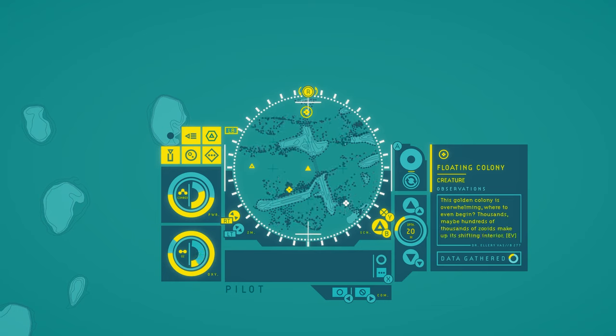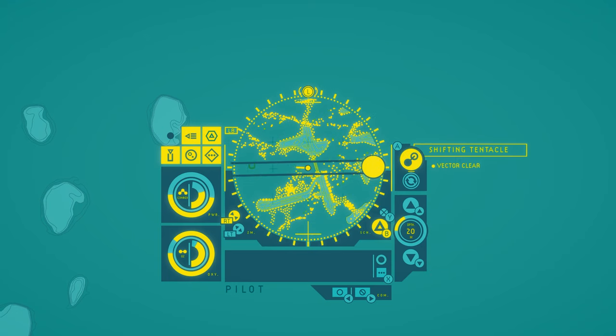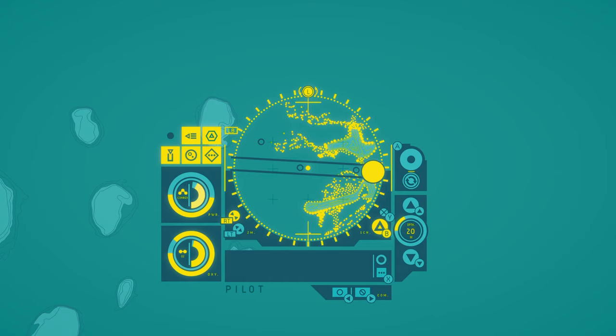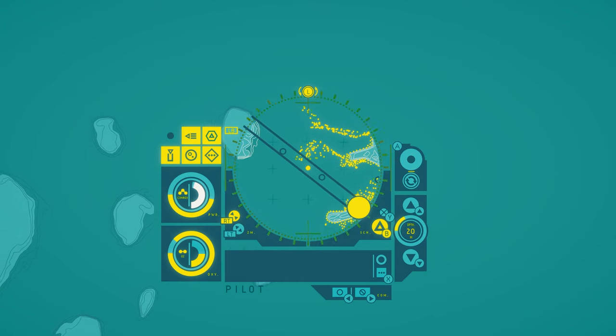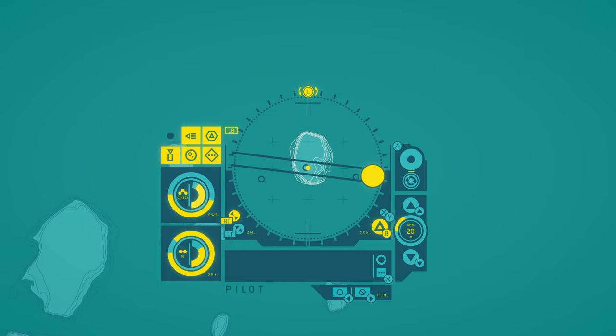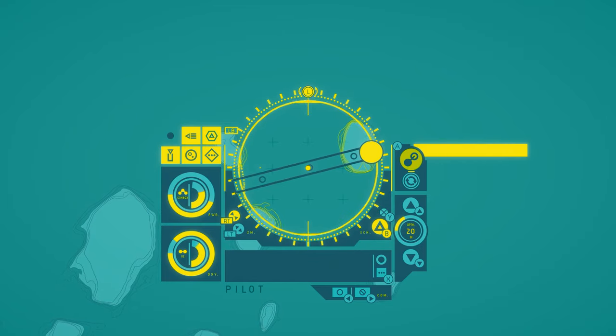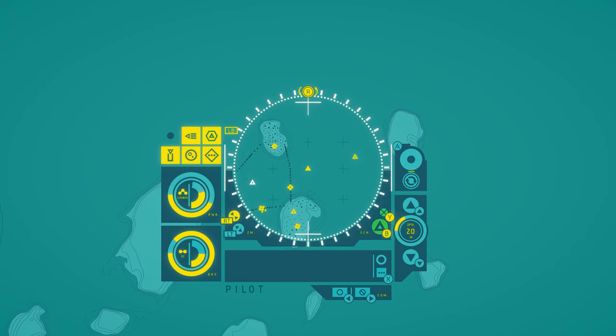Floating colony. This golden colony is overwhelming. Where to even begin? Thousands, maybe hundreds of thousands of zooids make up its shifting interior. It seems that the zooids are split into specialized functions and forms. From jellyfish-like medusoids to balloon-like bladders of gas.